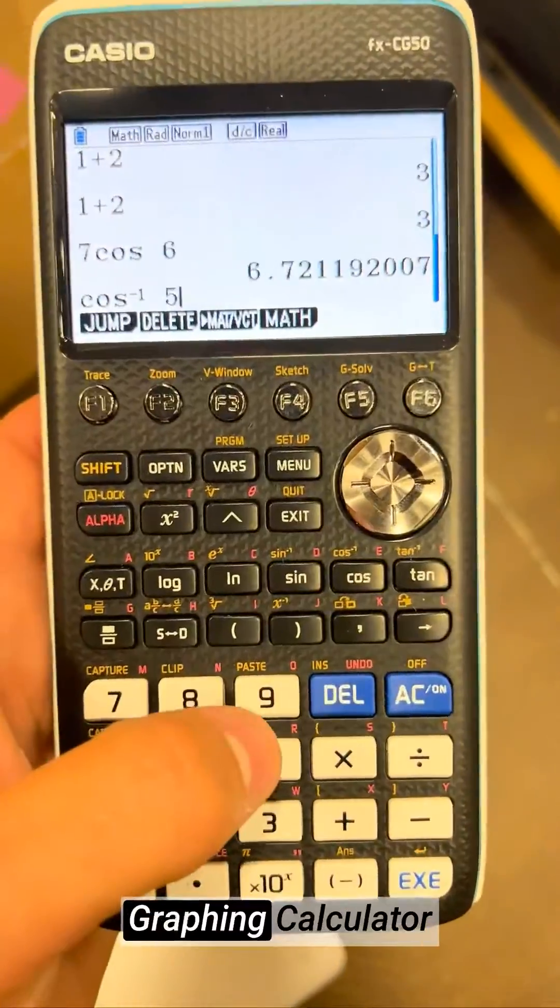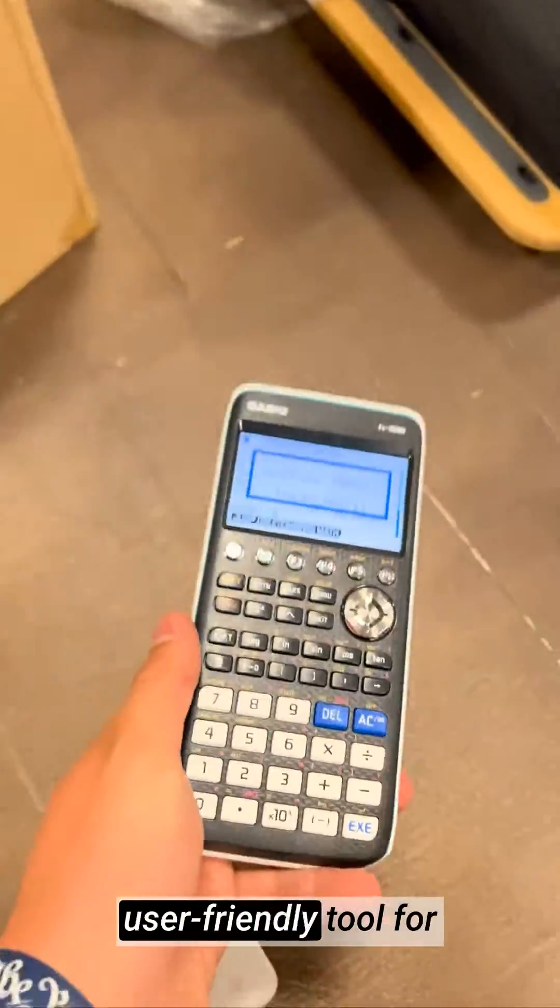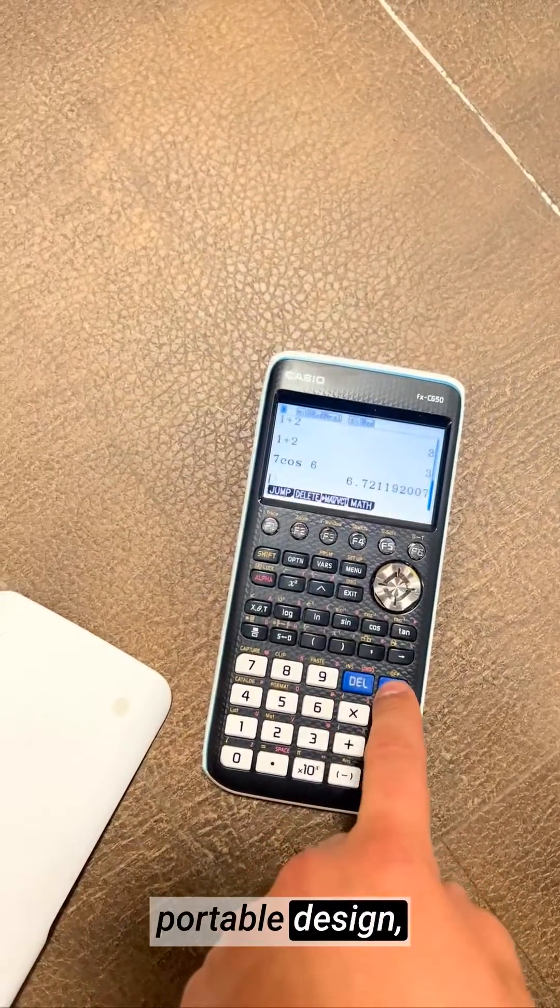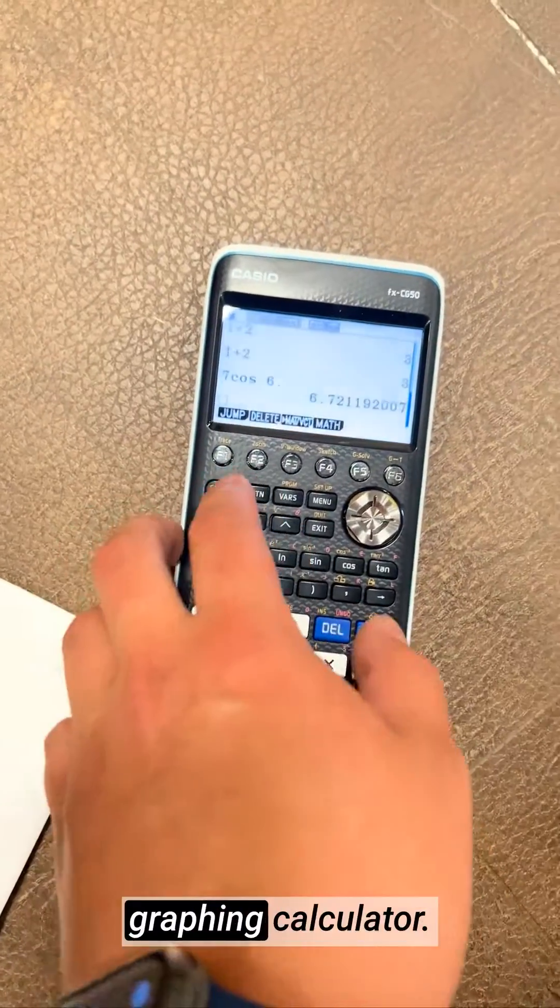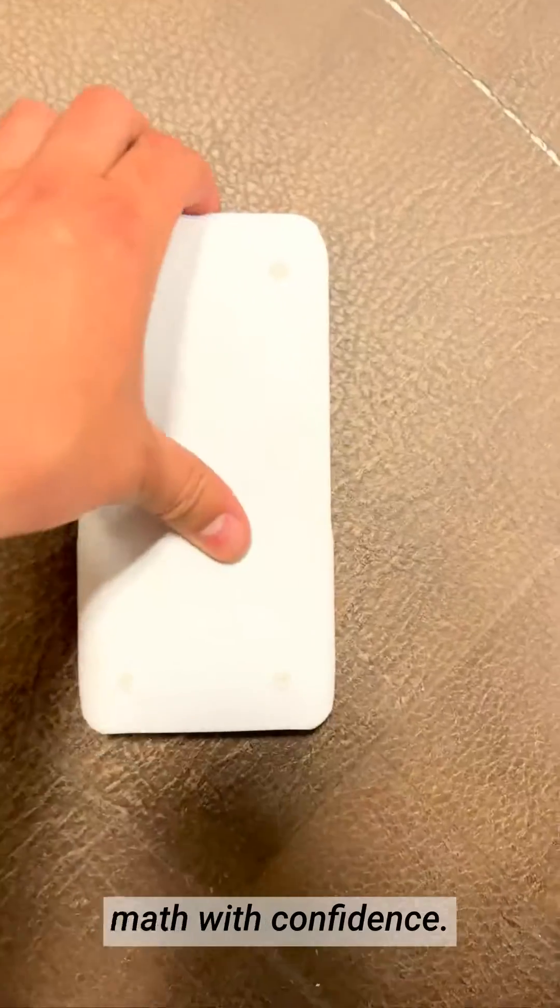The Casio Prism graphing calculator is a must-have for any student seeking an advanced and user-friendly tool for mathematical tasks. Its color display, portable design, intuitive interface, and comprehensive functions make it a standout graphing calculator. I highly recommend this calculator for mastering math with confidence.